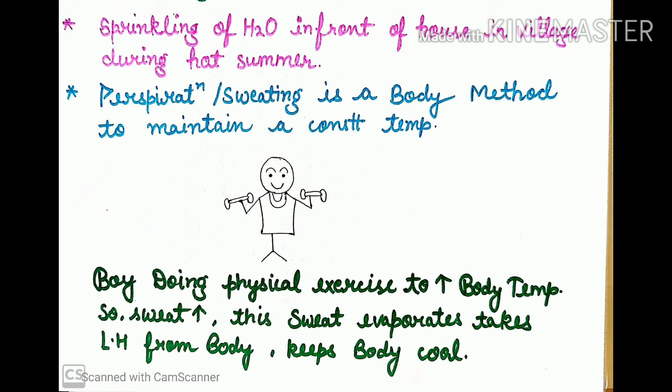Next is sprinkling of water in front of house in a village during hot summer time. When it is warm, you wash water in front of your house to make the area cool. The logic behind it is heat of vaporization. Water molecules will absorb the heat energy and go into the environment as vapor molecules. After going into environment and absorbing heat energy, only coldness remains in the surroundings.